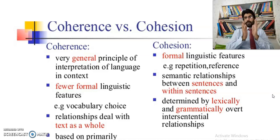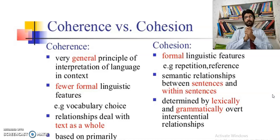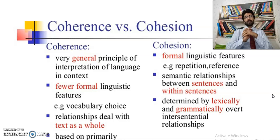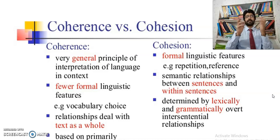Coherence means connection of ideas at paragraph level and connection of sentences. Coherence is a relationship between sentences and within sentences — it talks about ideas. Coherence is a very general principle of interpretation of language in context. It means observing what the context of that paragraph, that essay, that writing is.